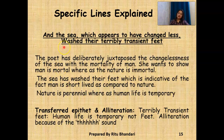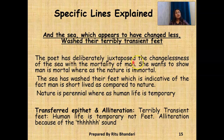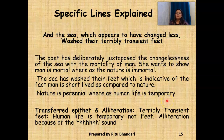There are certain specific lines which can be asked in the exam. 'And the sea which appears to have changed less washed their terribly transient feet.' The poet has deliberately juxtaposed the changelessness of the sea with the mortality of man. She wants to show man is mortal whereas nature is immortal. The sea has washed their feet, which is indicative of the fact that man is short-lived as compared to nature. Nature is perennial whereas human life is temporary. 'Terribly transient feet' is an example of transferred epithet as well as alliteration — human life is temporary, not feet, and alliteration because of the 'ter' sound.